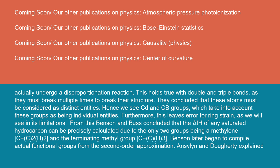Furthermore, this leaves error for ring strain, as we will see in its limitations. From this, Benson and Buss concluded that the ΔH°f of any saturated hydrocarbon can be precisely calculated due to the only two groups being a methylene, C-(C)₂(H)₂, and the terminating methyl group, C-(C)(H)₃. Benson later began to compile actual functional groups from the second-order approximation.